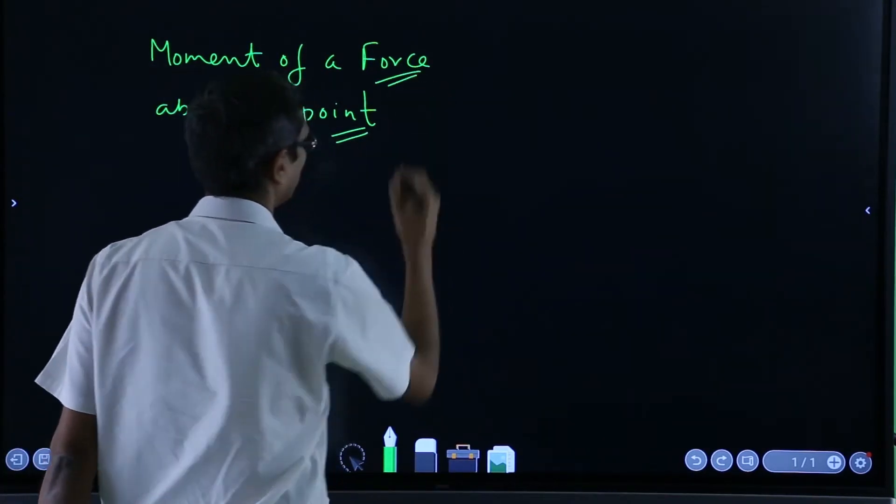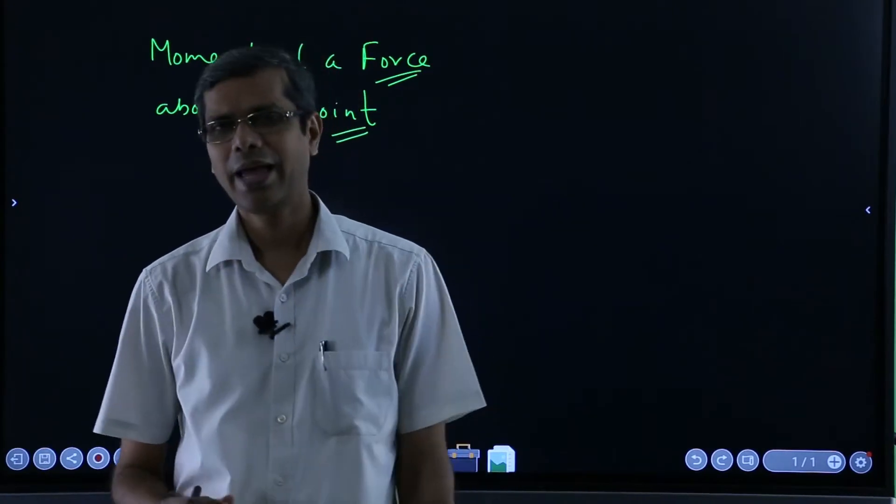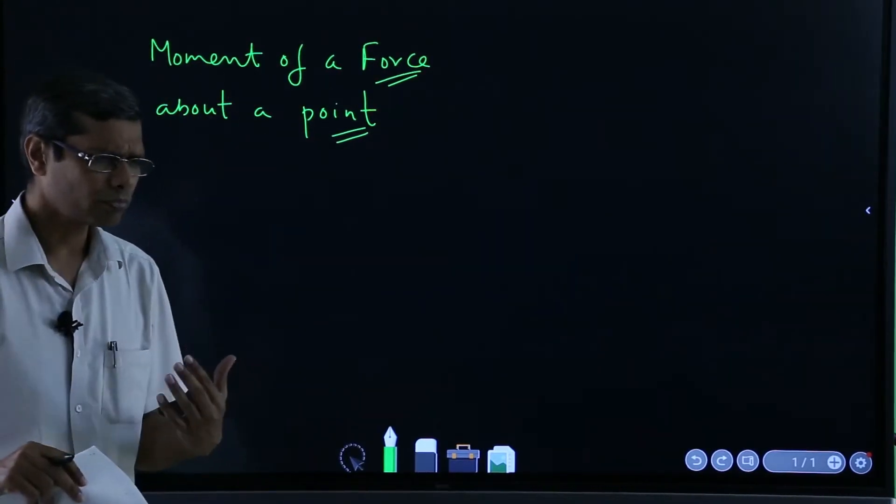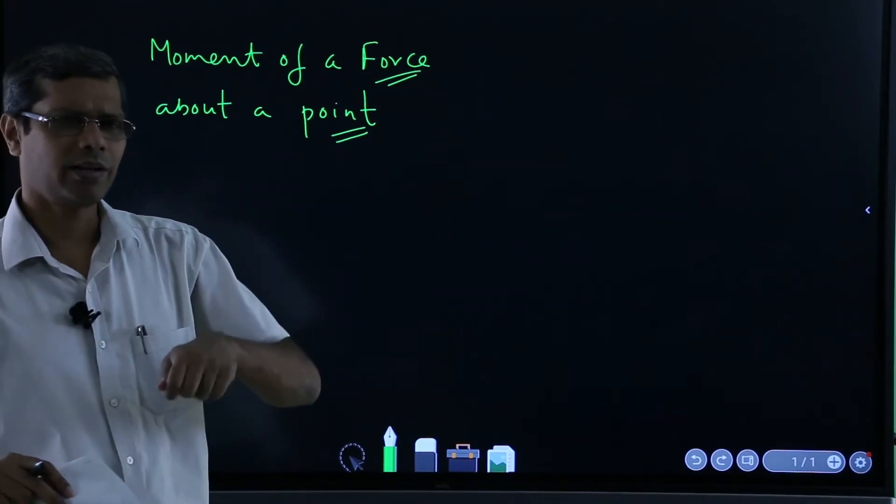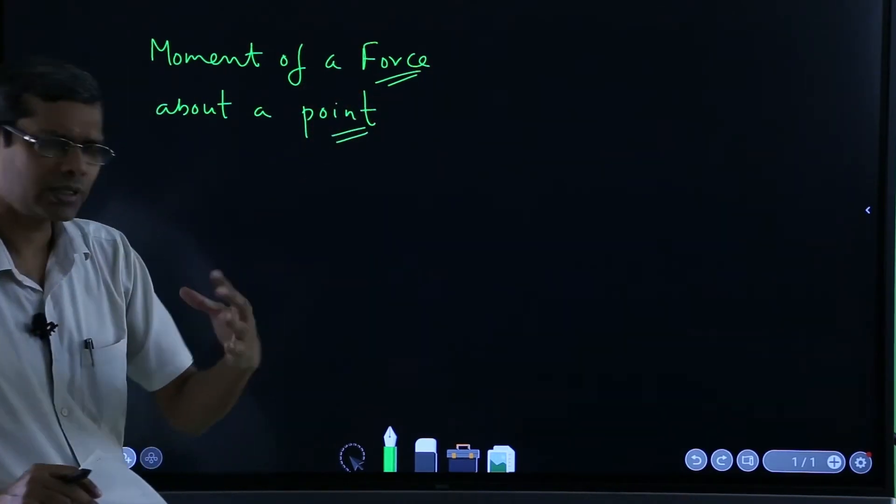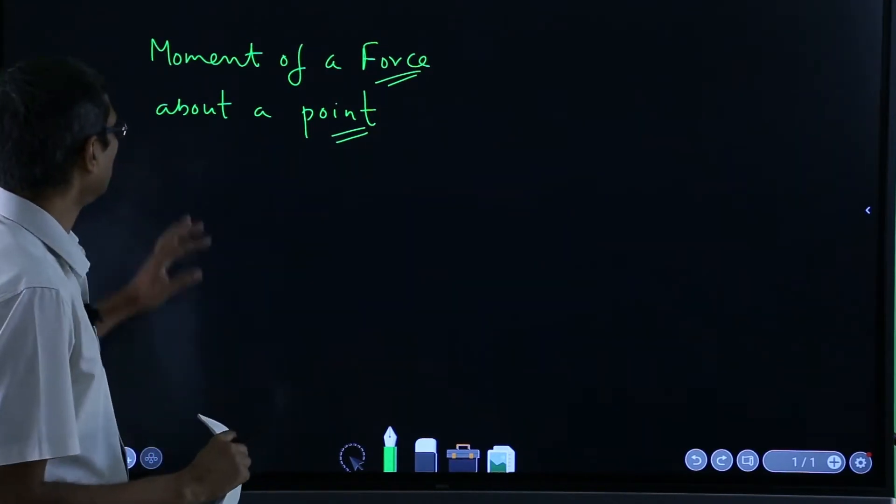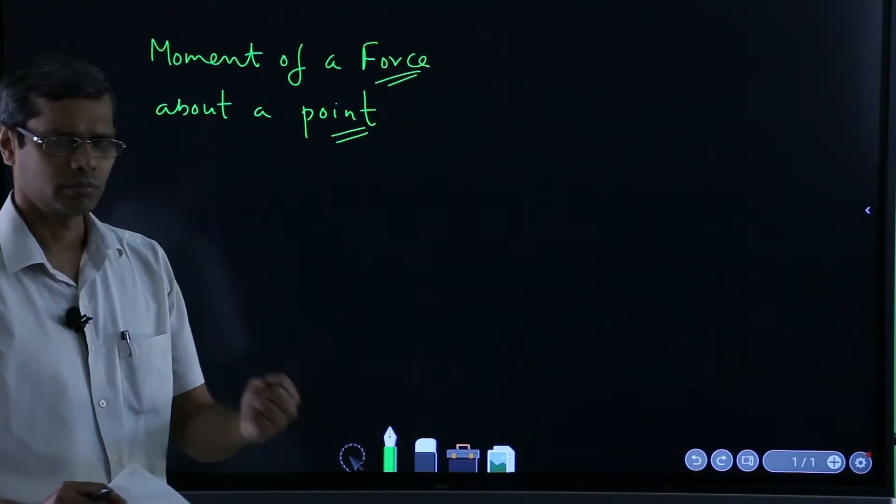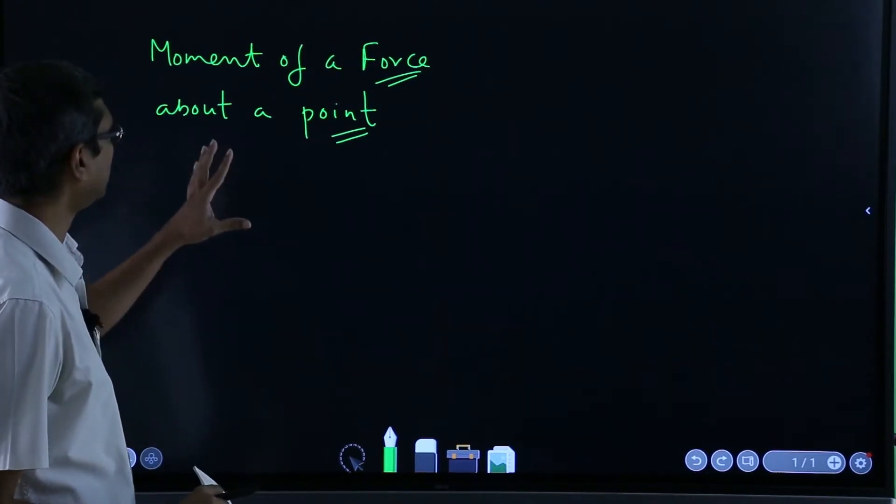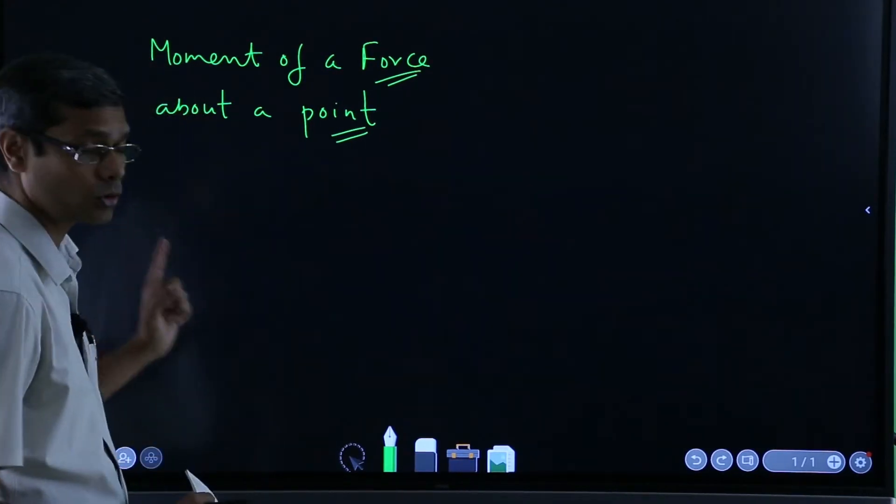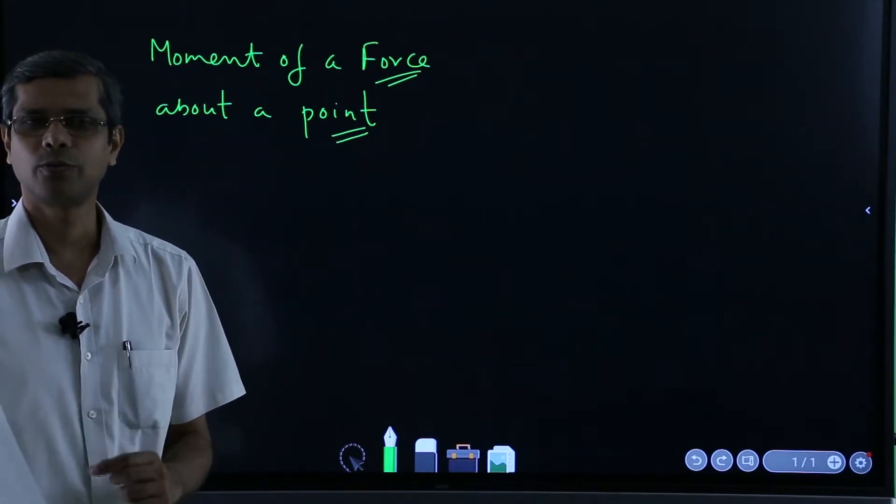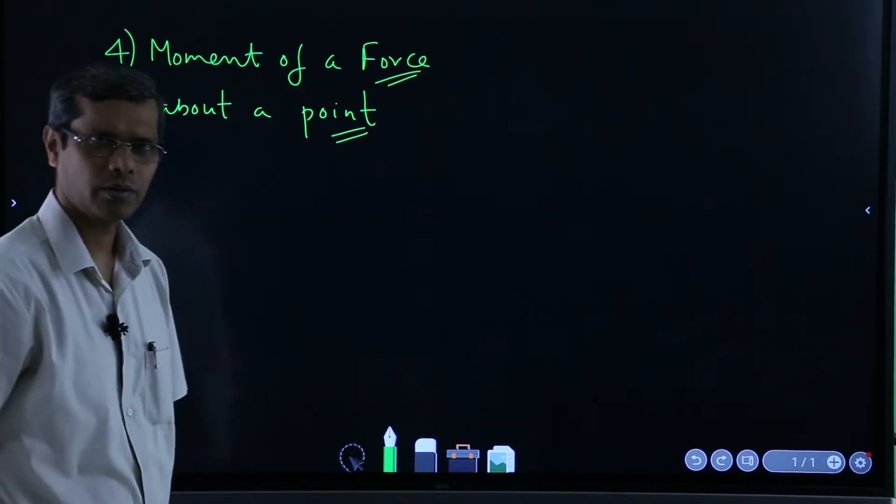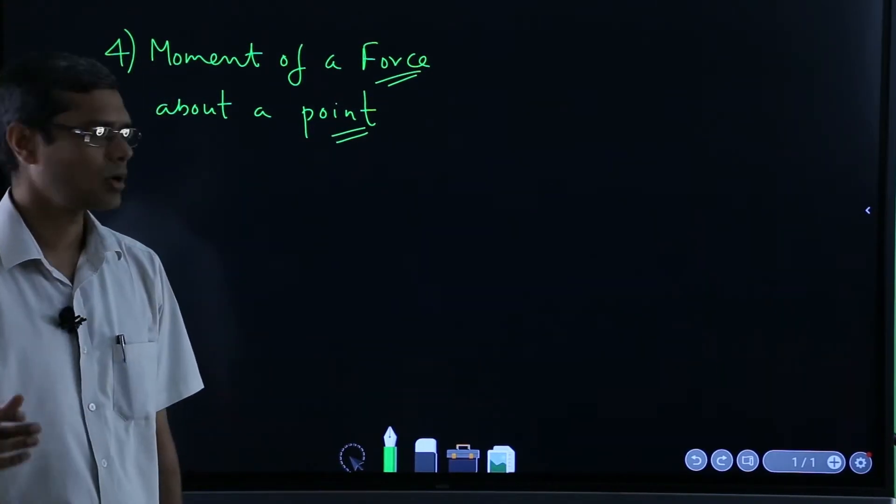There is a point in space and there is a force, and you have to find out the moment of that force about that point. When we are talking about the moment, basically what happens is the force which gives the effort to twist it - that is the physical meaning. How much is the twisting effort? This is going to be one of the basic building blocks.